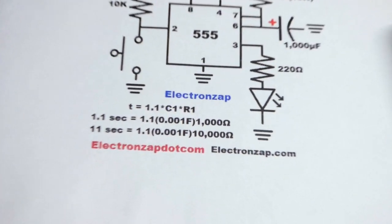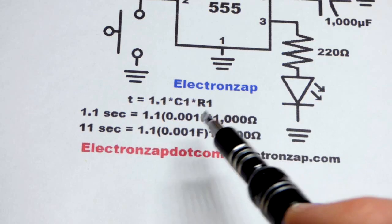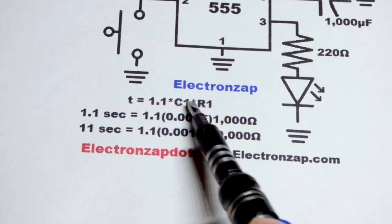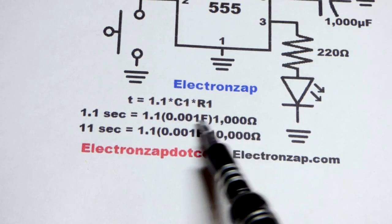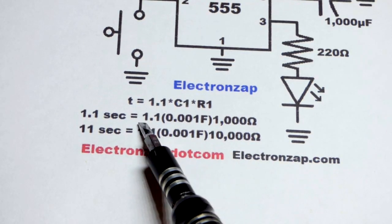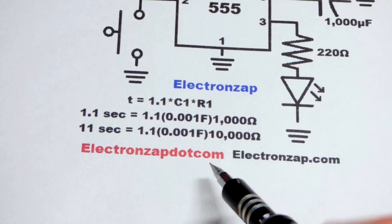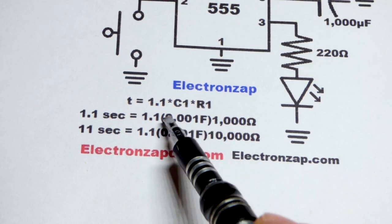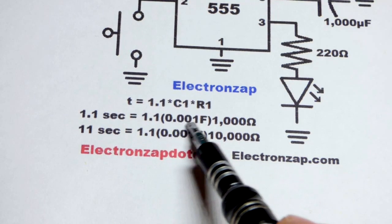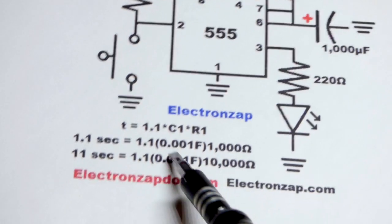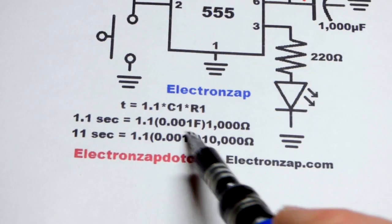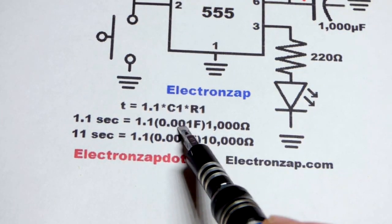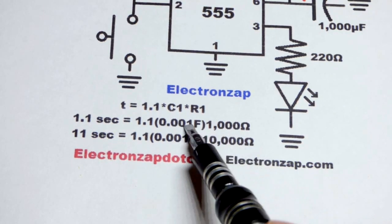When it comes to the timing, you take the capacitance in farads and the resistance in ohms. You multiply them together and then multiply that by 1.1. 0.001 farad is the same as 1,000 microfarads or a millifarad, but usually we don't refer to capacitance in millifarads.